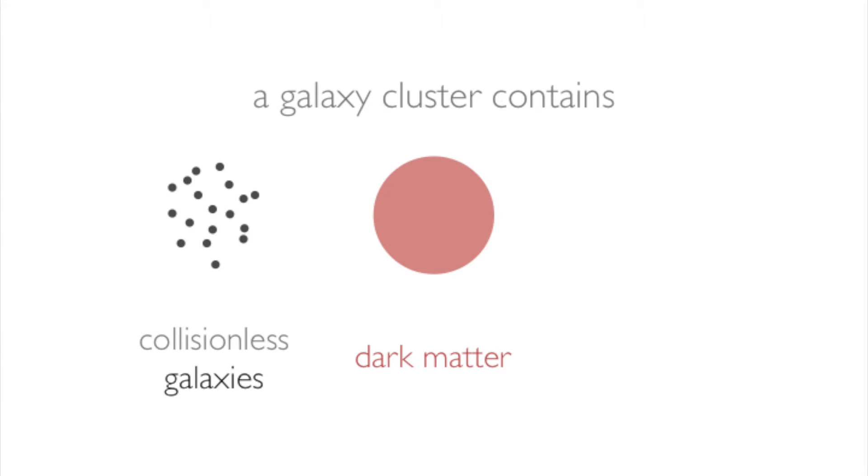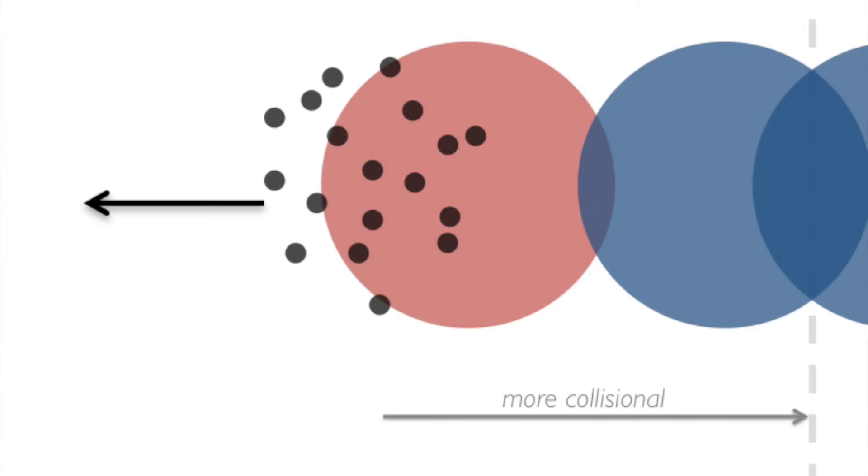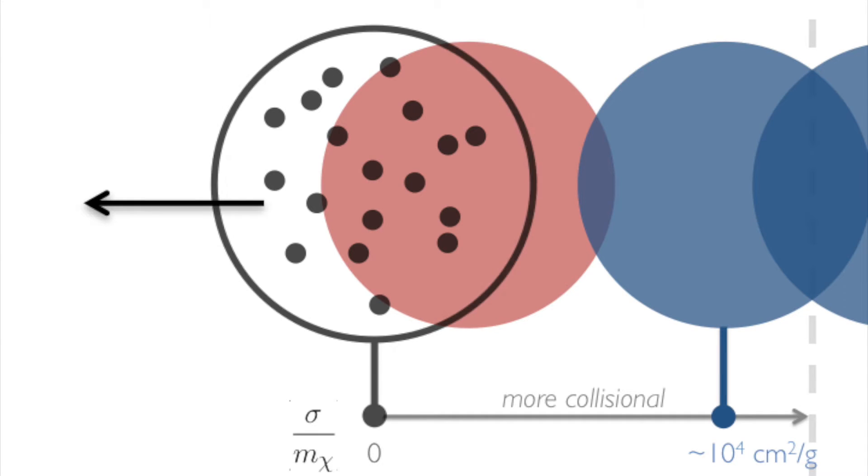Clusters are key because they are the largest found reservoirs of dark matter and possess two additional components that bracket the extreme end collisionality: collisionless galaxies, and highly collisional gas. When clusters collide, the components separate based on their collisionalities. The collisional gas appears to lag far behind the collisionless galaxies. Measuring how far the dark matter lags behind the galaxies can tell us about its collisionality.